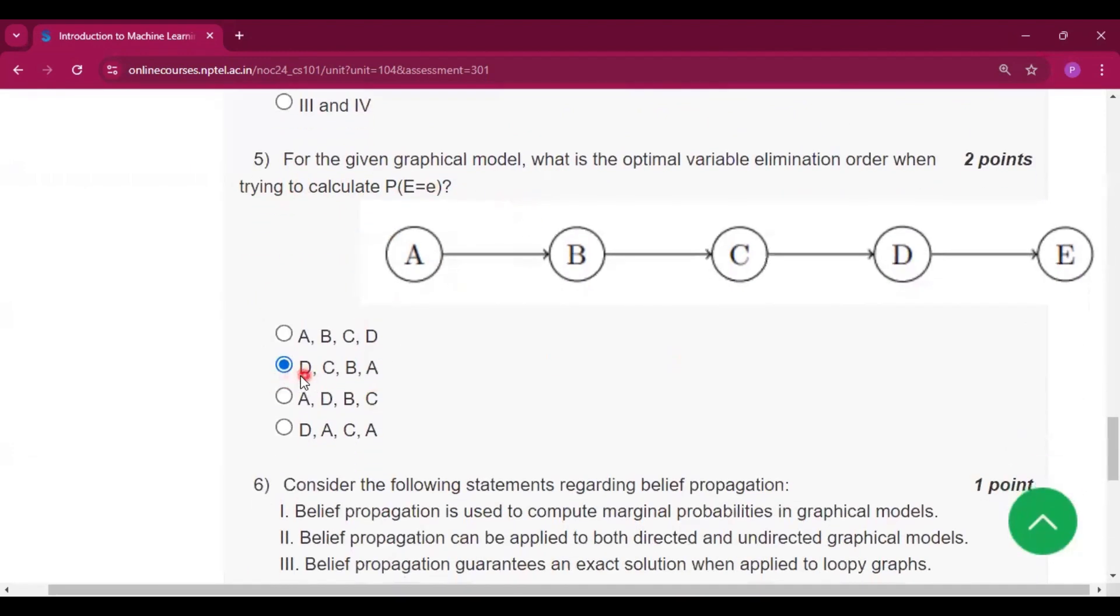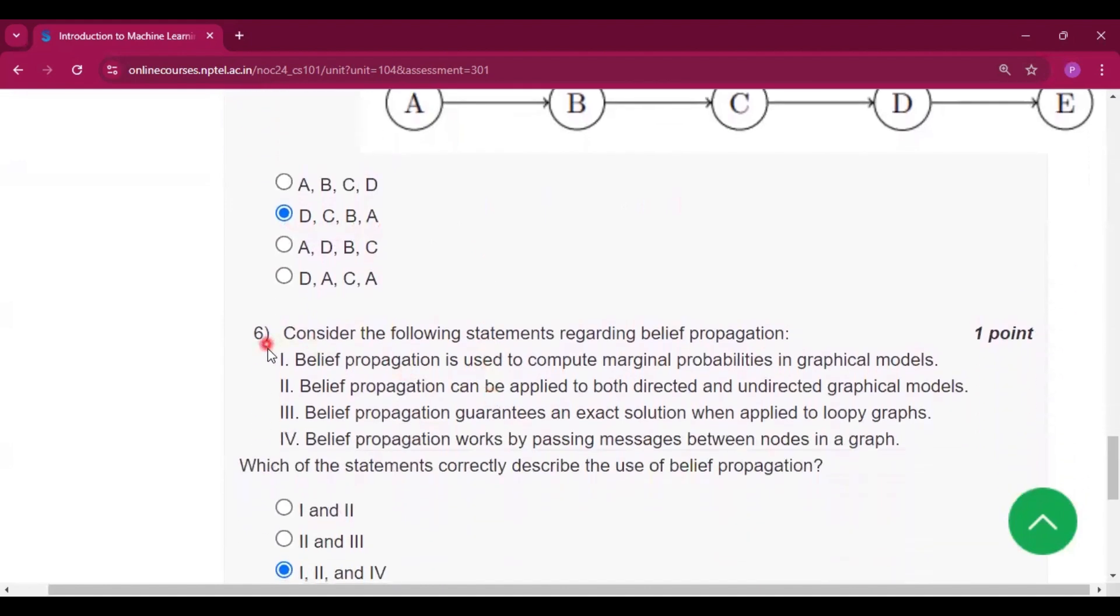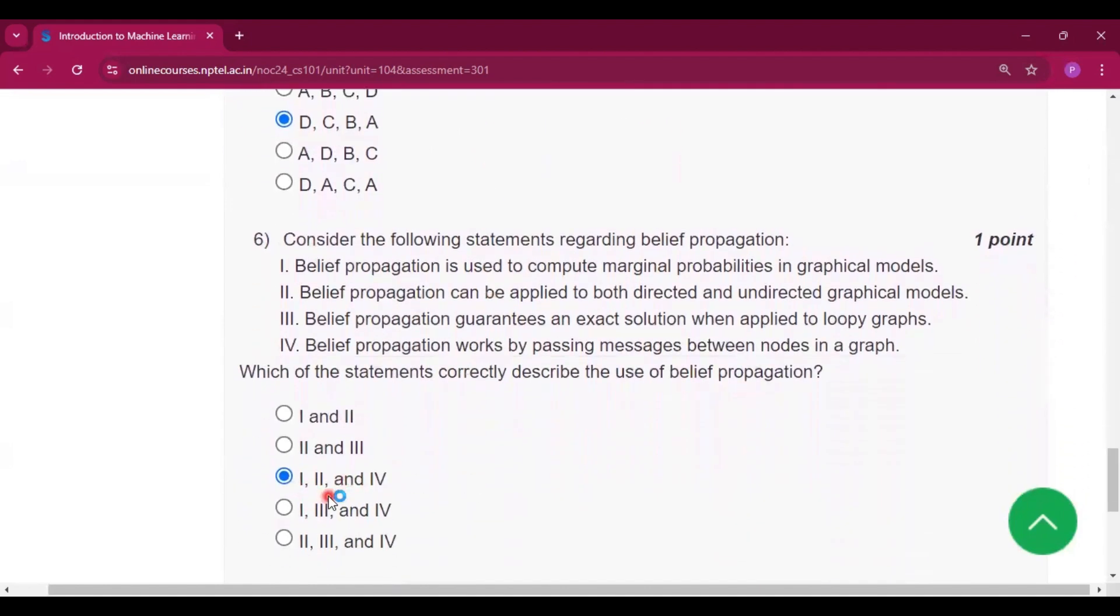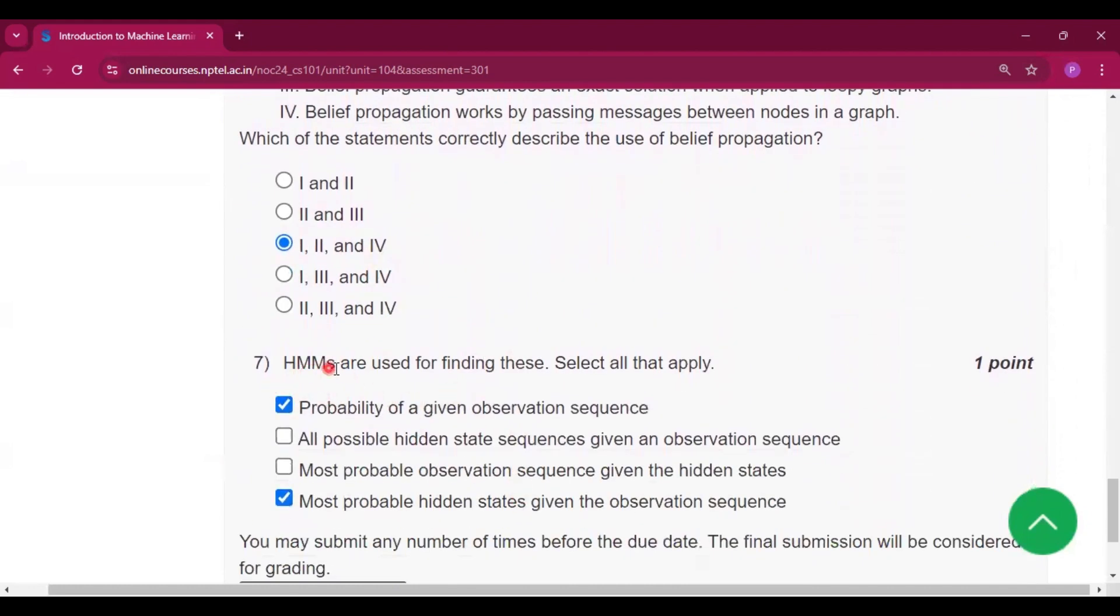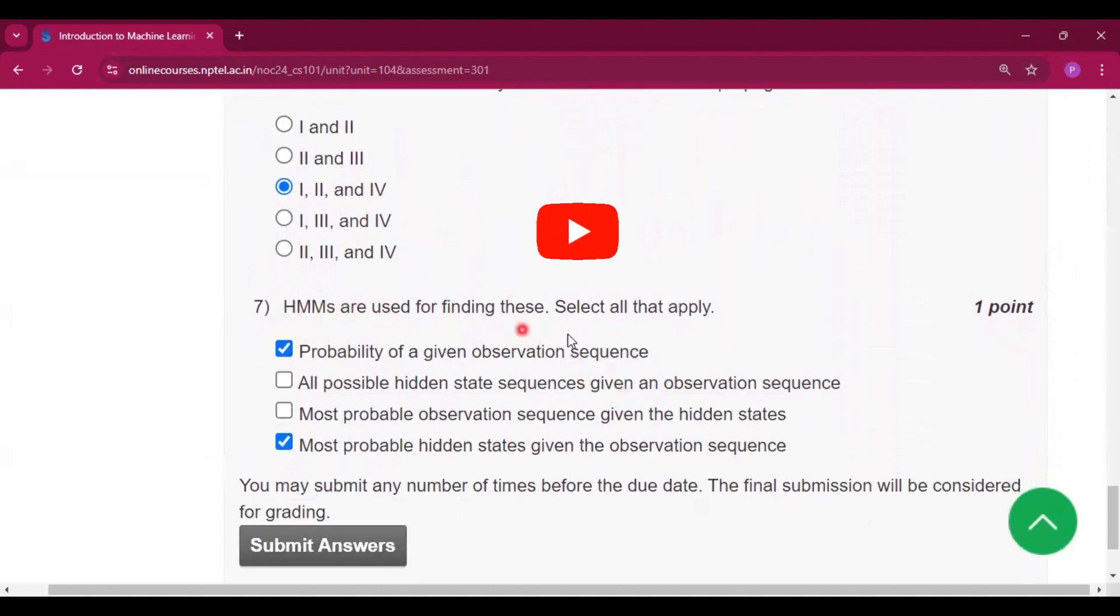The answer will be DCBA. Now question number six, the answer will be one, two, and four, that means option three, option C. Now question number seven: HMMs are used for finding this.